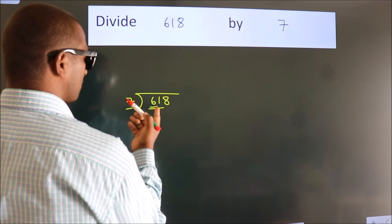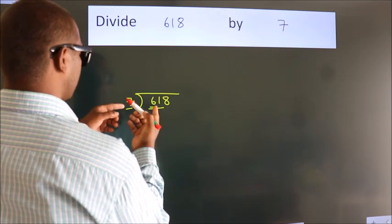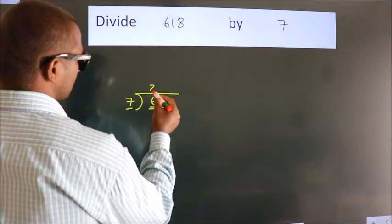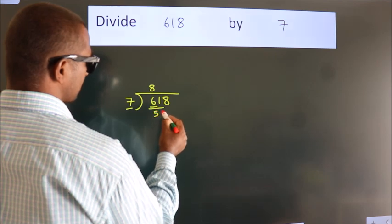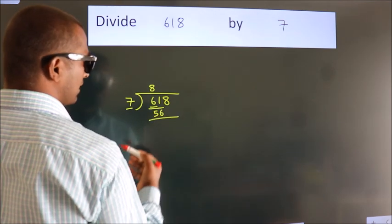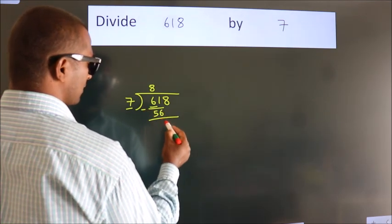A number close to 61 in 7 table is 7 times 8, 56. Now we should subtract. We get 5.